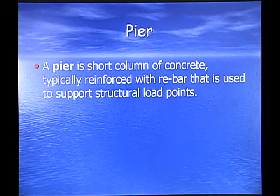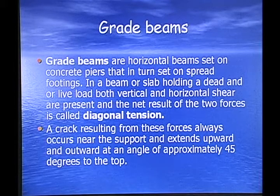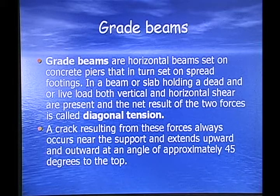A pier is a short column of concrete, typically reinforced with rebar, that is used to support structural load points. Grade beams are horizontal beams set on concrete piers that in turn set on spread footings. In a beam or slab holding a dead or live load, both vertical and horizontal shear are present, and the net result of the two forces is called diagonal tension. A crack resulting from these forces always occurs near the support and extends upward and outward at an angle of approximately 45 degrees to the top.